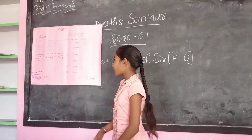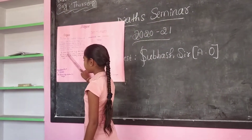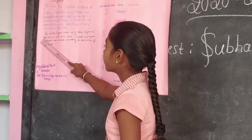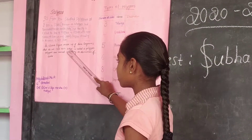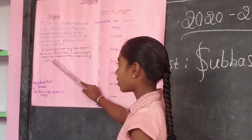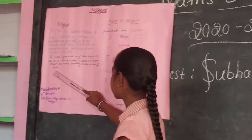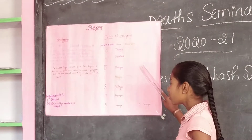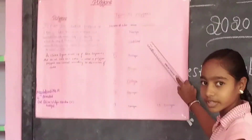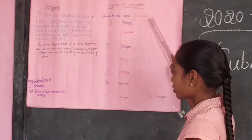My topic is polygons. Polygons are made of line segments that do not cross each other. Polygons are named according to the number of sides. The number of sides is named in directions.